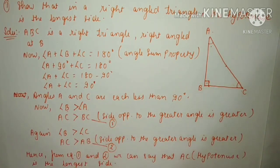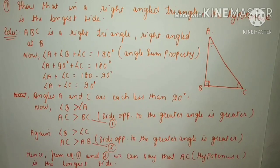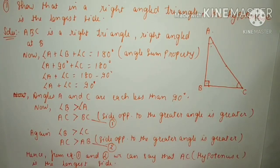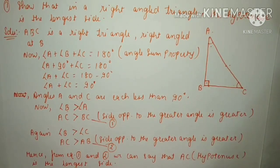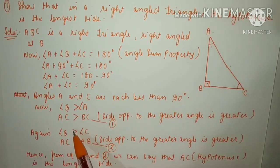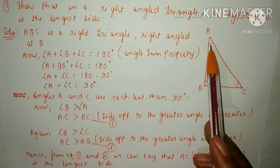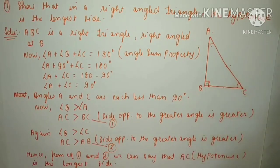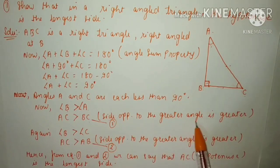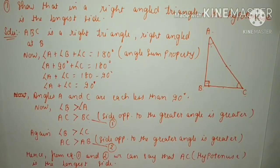Angle B is greater than angle A. Then the side opposite to angle B will be greater than the side opposite to angle A. The side opposite to angle B is AC, and the side opposite to angle A is BC. So AC is greater than BC. The reason is: the side opposite to the greater angle is greater. Name this as equation number 1.